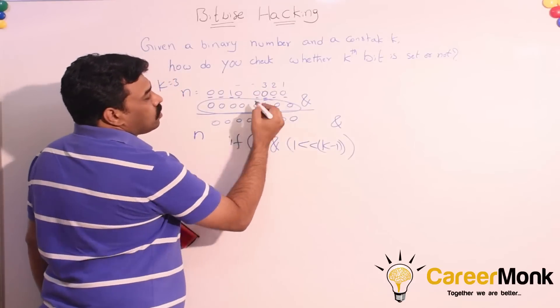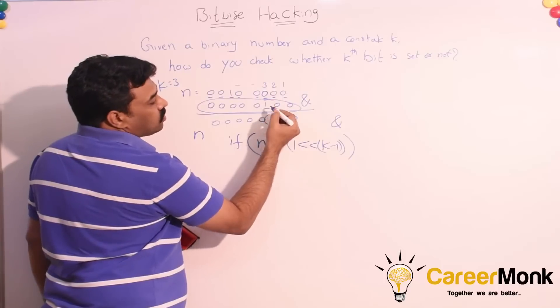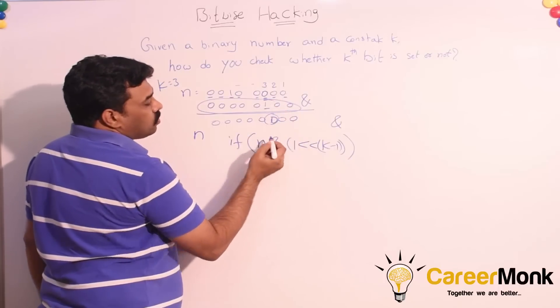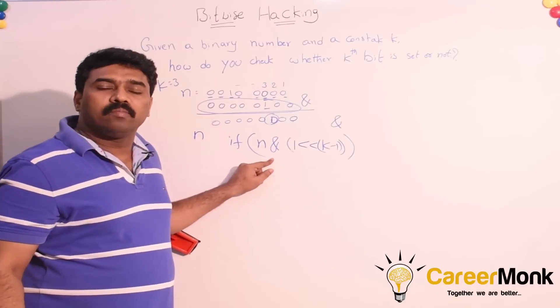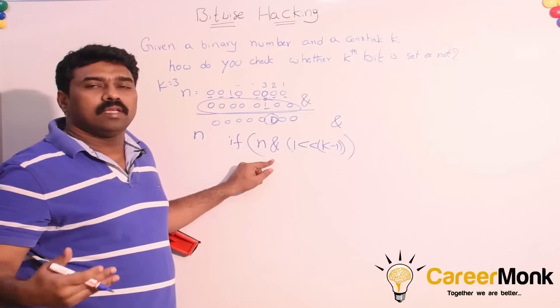If this is non-zero, we can say the corresponding kth bit is set. For example, if it is zero, zero bitwise AND with 1 will become zero. We are getting zero. That is why, if this operation is giving non-zero result, it means the corresponding kth bit is set. Otherwise, it is unset.